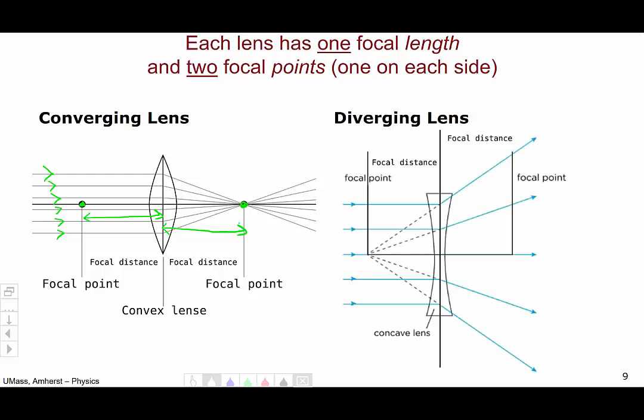Similarly, for a diverging lens, we have two focal points, one on each side of the lens, each the focal length from the center.